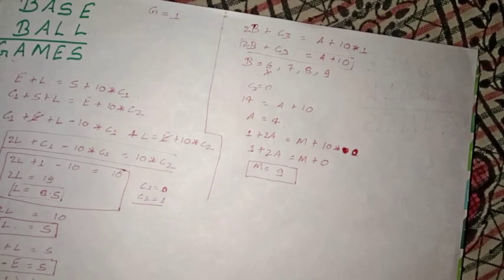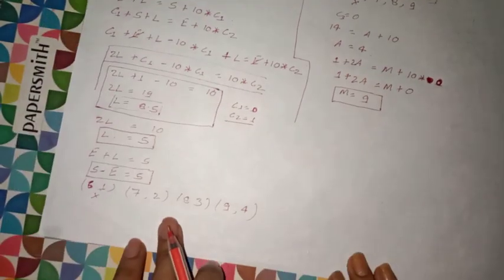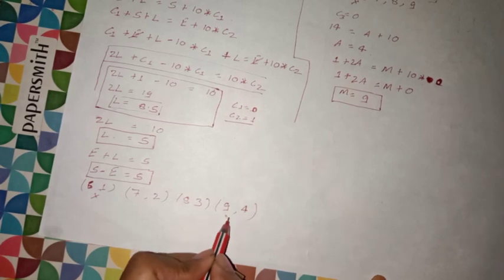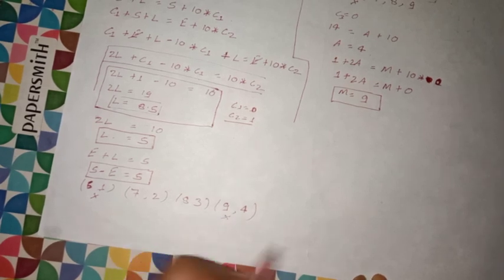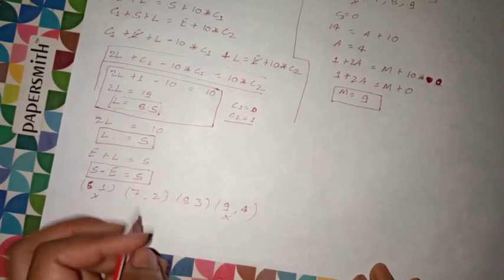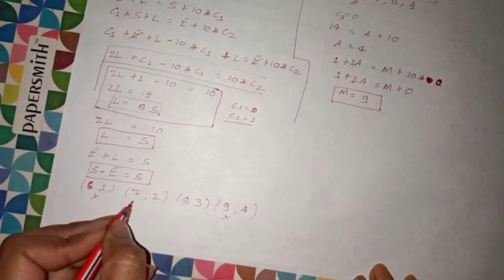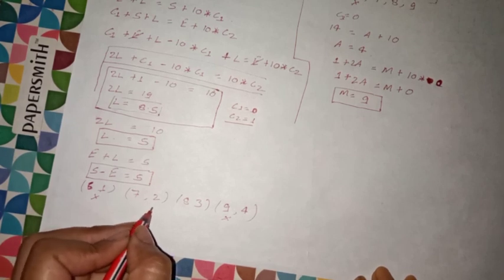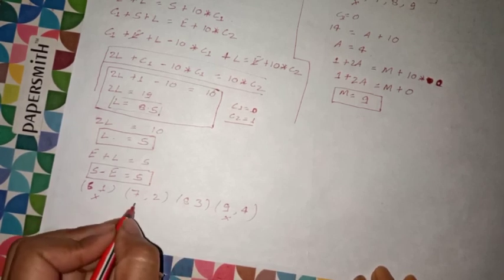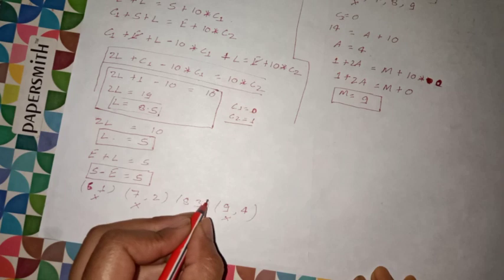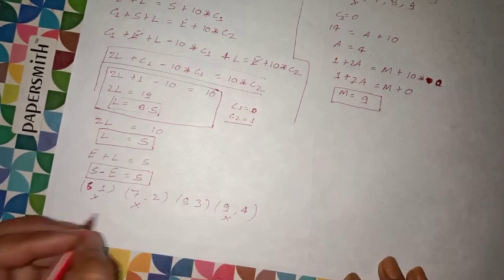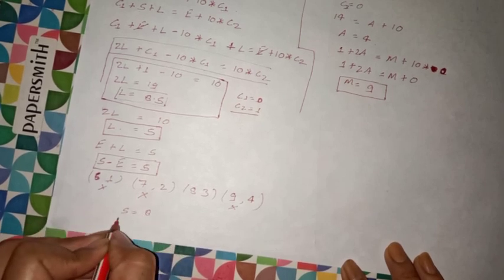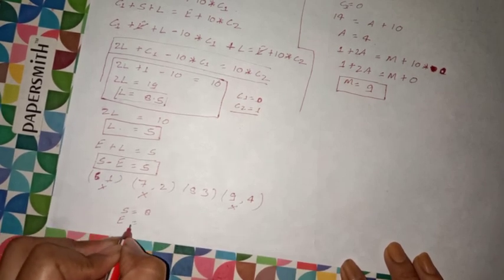Now we see E and S possible values. M equals 9 is already occupied. From our pairs, 7 and 2: 7 is already B. So 8 and 3: S equals 8 and E equals 3.